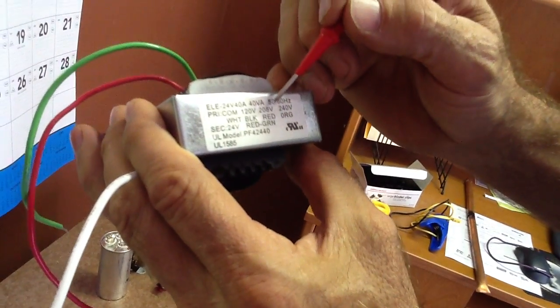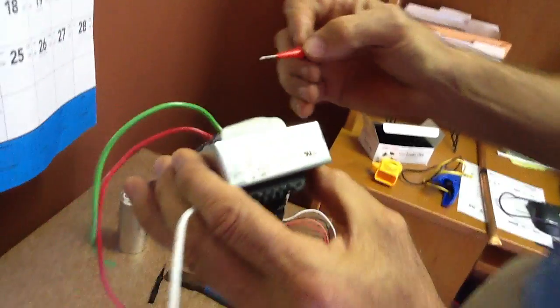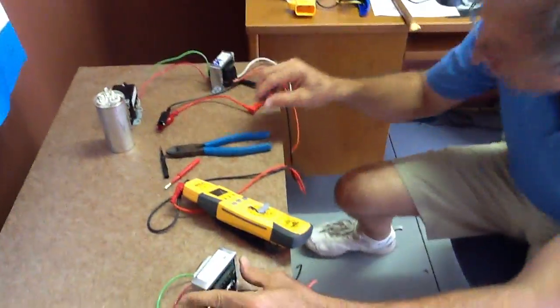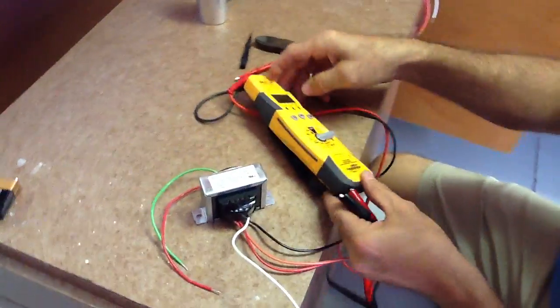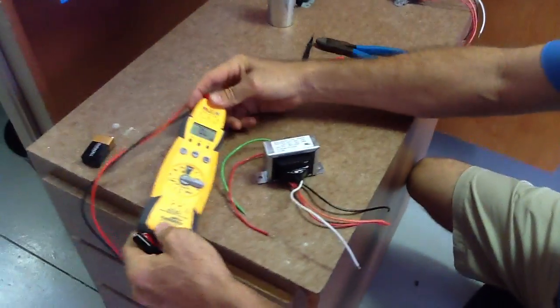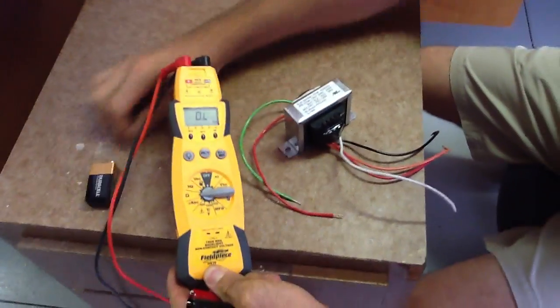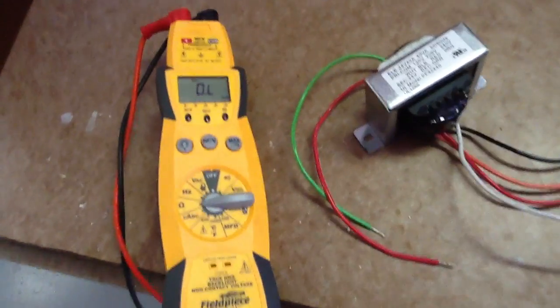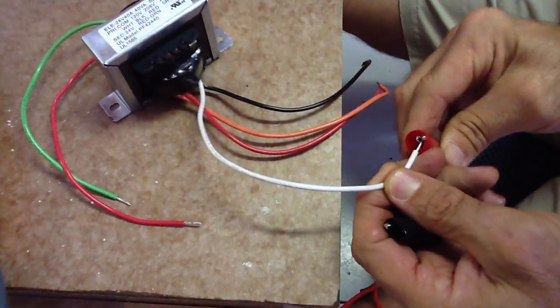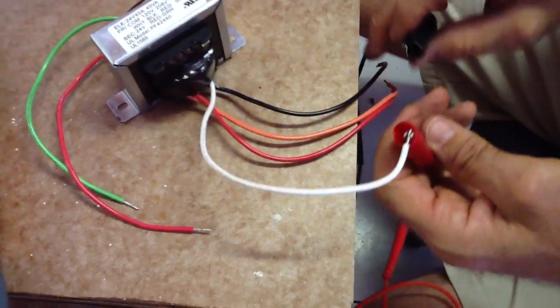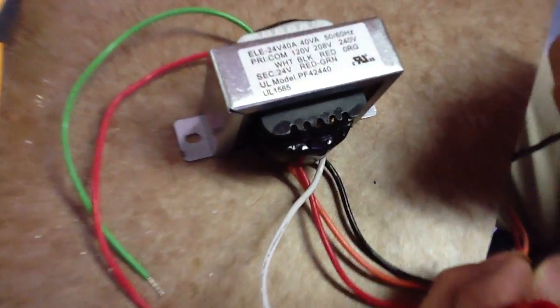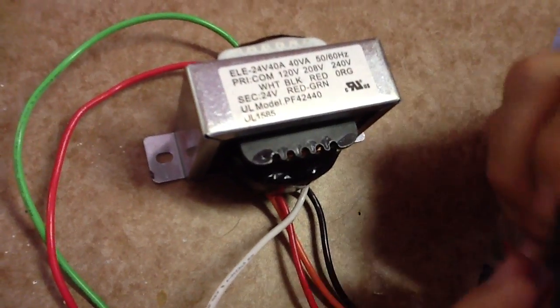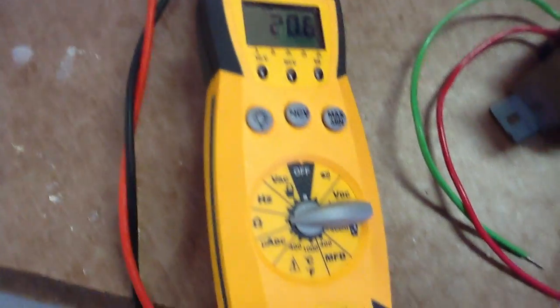So we're going to talk about this. I'm going to take the amp probe here, and really what we're going to discuss is resistance. Always hook up your common wire, and I'm going to go to the black wire first - that's your 120 volts. As you see, I want you to look at the meter here. Just so you know, I've got the meter, the field piece, set on resistance.